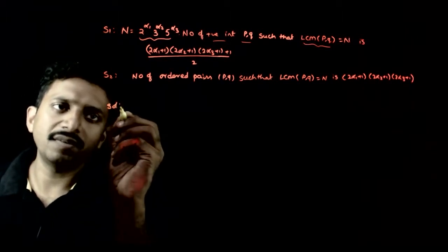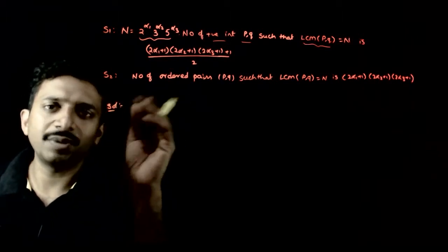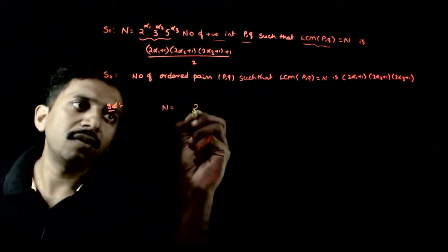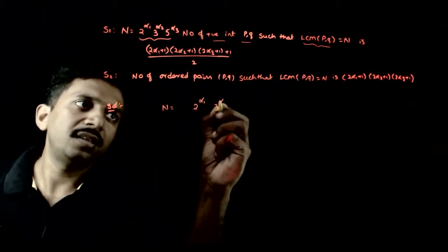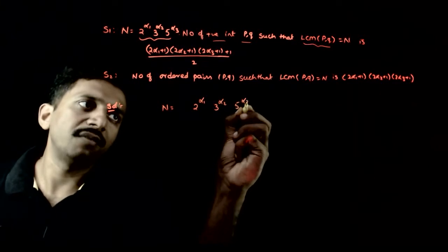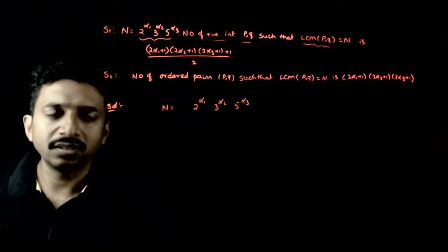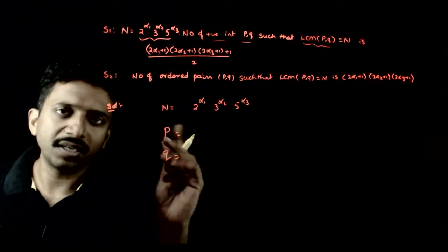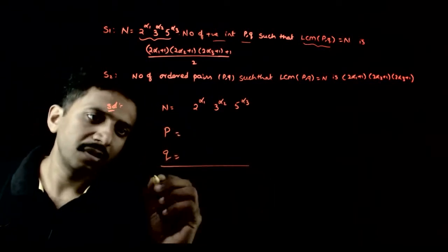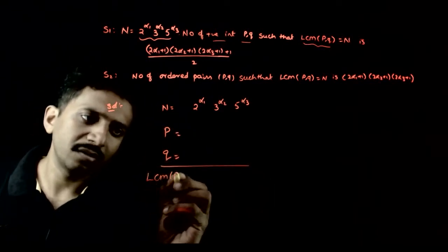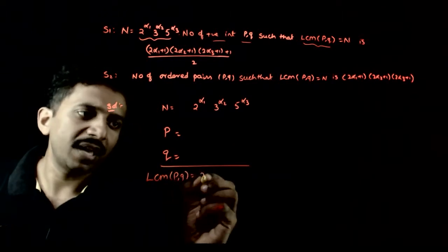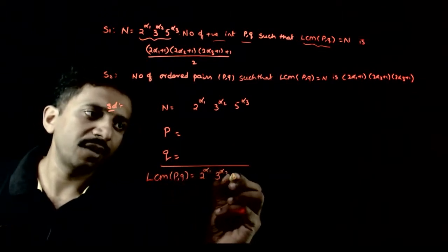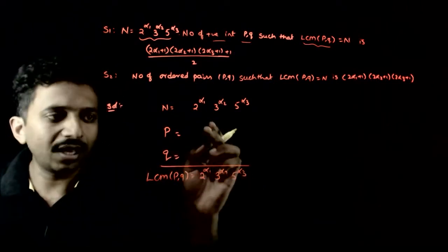Let us analyze the given statements. For Statement 1, if n = 2^α1 · 3^α2 · 5^α3, I want two numbers p, q such that their LCM equals 2^α1 · 3^α2 · 5^α3. The prime factorization of p and q should only involve the primes 2, 3, and 5, because the LCM only has 2, 3, and 5 as prime factors.